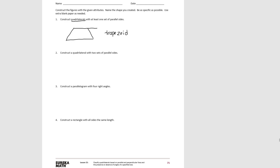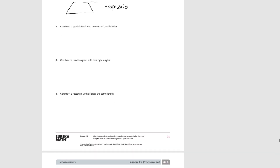Pause the video and try number two. A quadrilateral with two sets of parallel sides — so this would be one set, and the second set would also have to be parallel. And this would be a parallelogram.